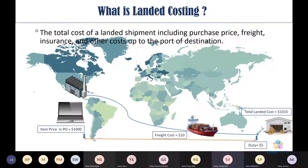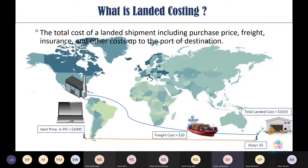A participant asks whether 'item price' refers to the ex-factory cost — for example, when a US legal entity designs modules for cars, sends them to a Mexico plant, where production plus markup yields the ex-factory price, and then ships to the destination. The presenter confirms: yes, that's correct — ex-factory plus whatever else equals the landed cost.